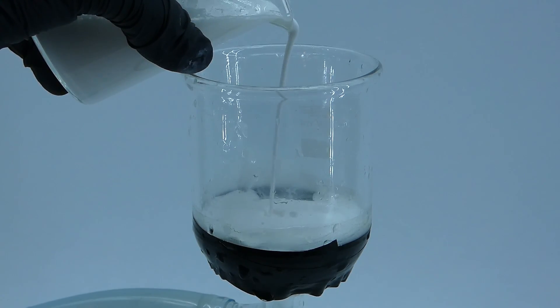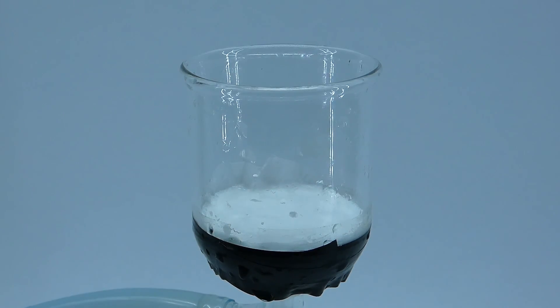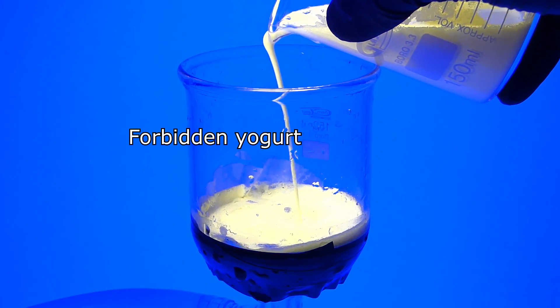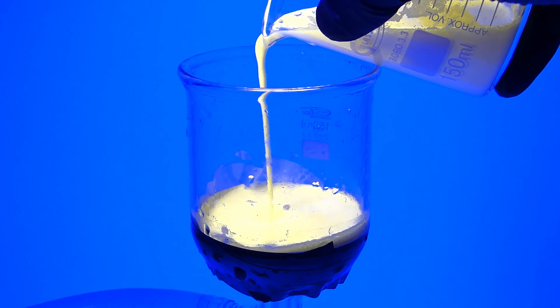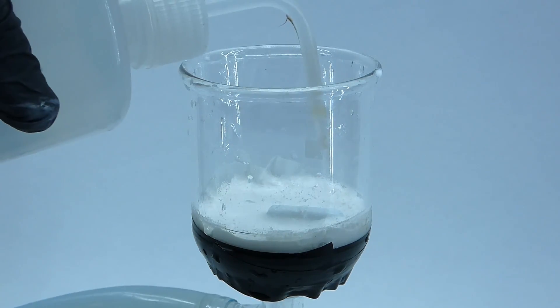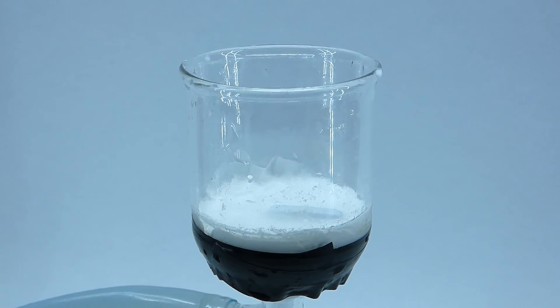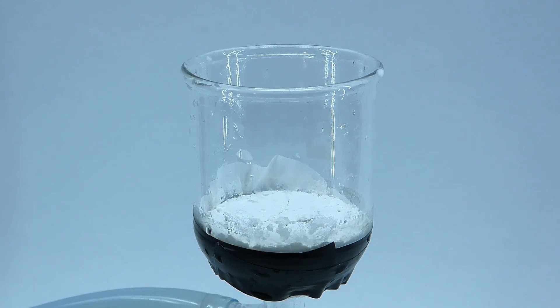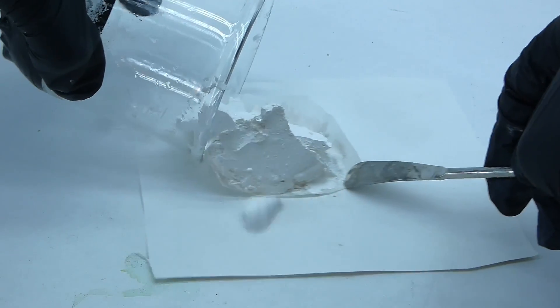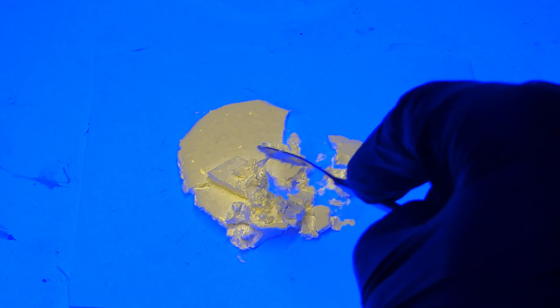Now, to separate and purify the complex, I vacuum filtered it, and under UV light, it looked pretty incredible. I then washed it with a lot of water to remove any impurities, and after drying it on the filter for a while, I got it out onto a piece of paper and broke it into many small pieces, which also looked very nice under UV light.